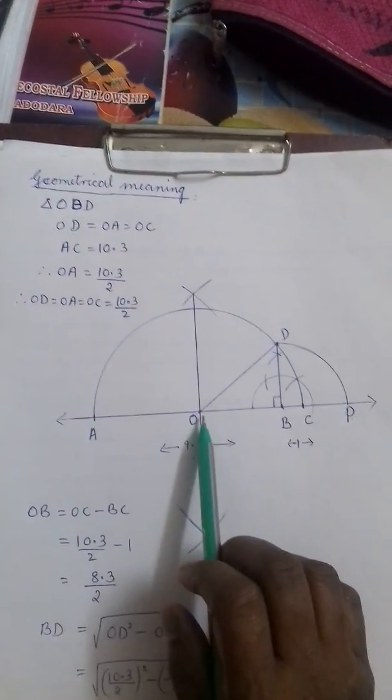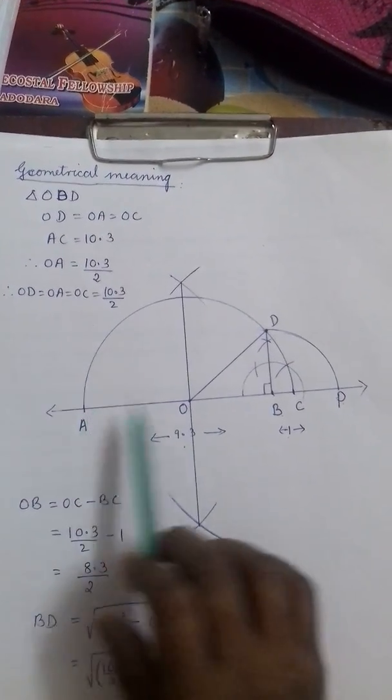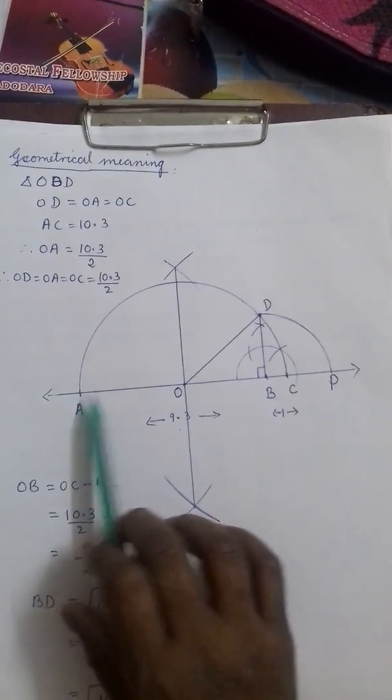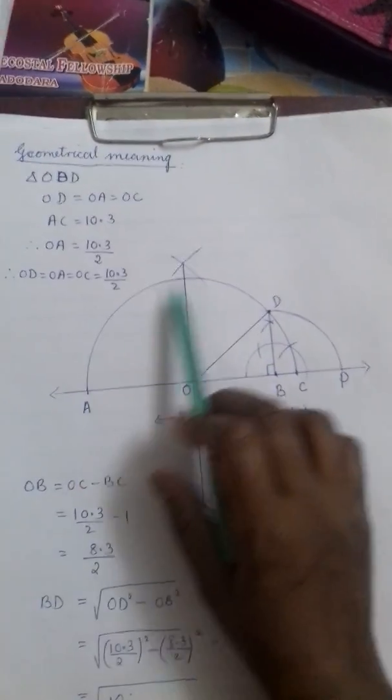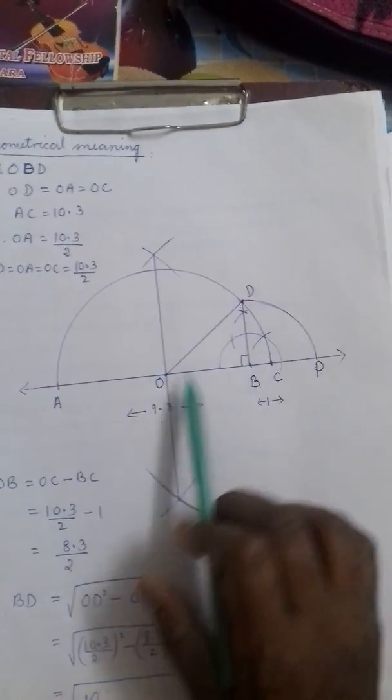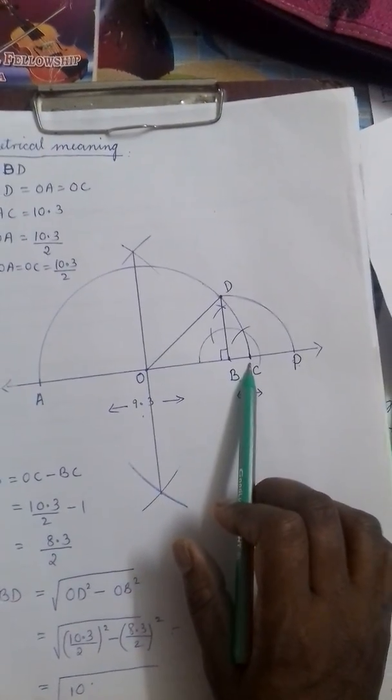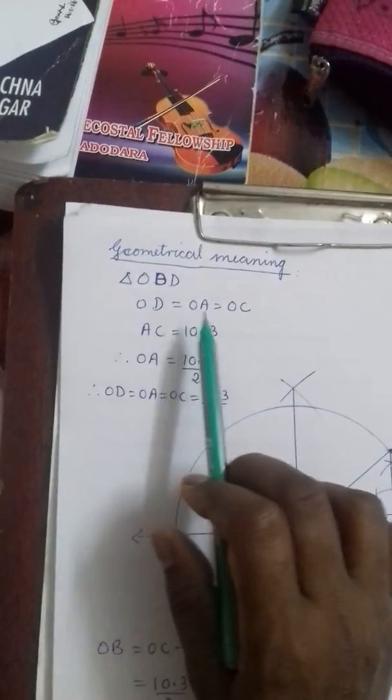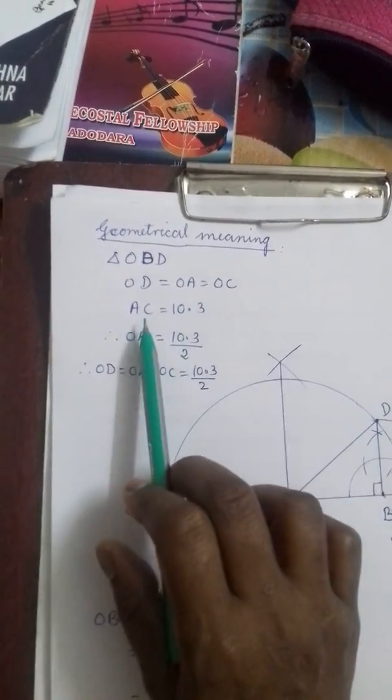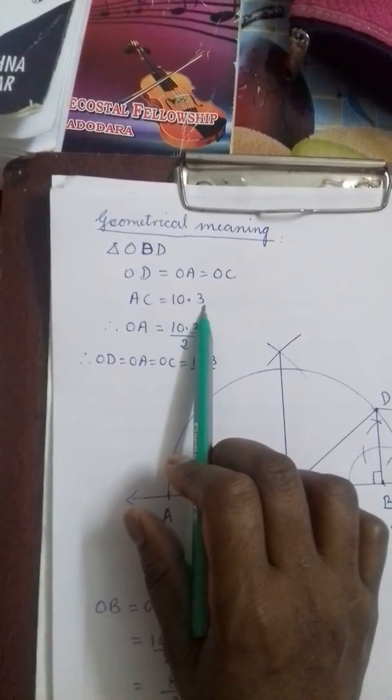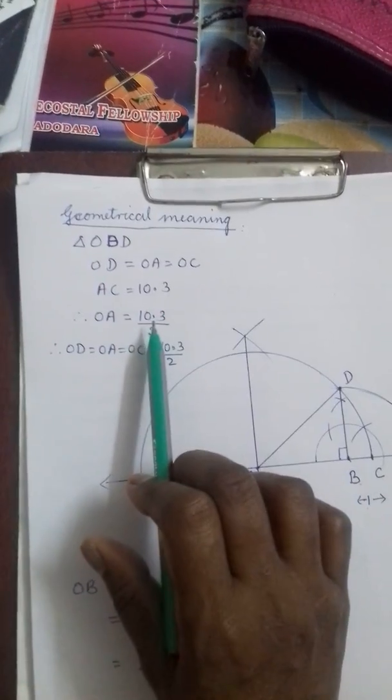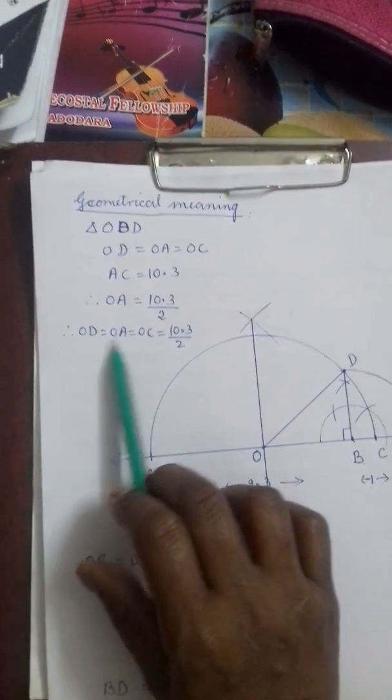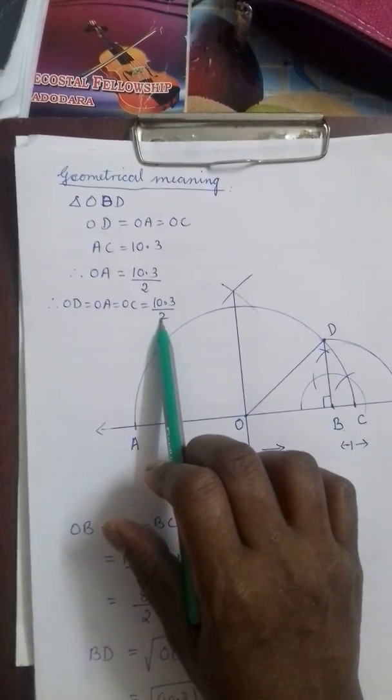Then since O is the midpoint of AC by construction, OA equals OC and OD is the point on this semi-circle. So OA, OD and OC all the three are radii of this semi-circle. Hence we can say OD equals OA equals OC and AC is 10.3. So what will be the value of OA, OD, OC? Half of 10.3 divided by 2. We will not divide because it will again increase the number of decimals.